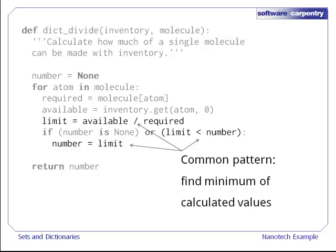The third is using calculate, test, and store to find a single value, in this case minimum, from a set of calculated values. We could calculate the list of available over required values, then find the minimum of that list. But doing the minimum test as we go along saves us having to store the list of intermediate values. It's probably not a noticeable time saving in this case, but it would be with larger data sets.